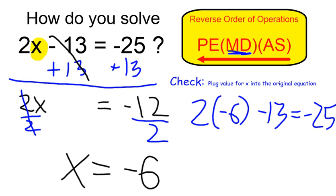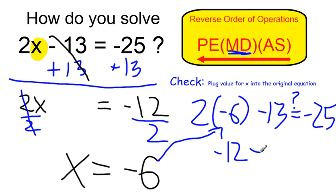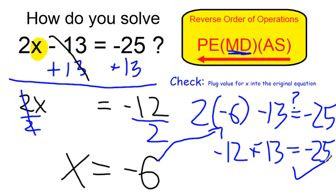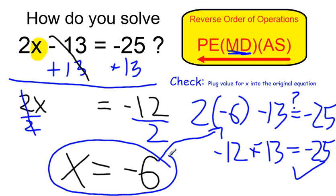Now I can check this by plugging negative 6 into my original equation and seeing if it is in fact true. 2 times negative 6 is negative 12. If I do negative 12 minus 13, it's like plus negative 13, and that does give me negative 25. So it does check out. The solution is that x must equal negative 6 in order for my original equation to be true.